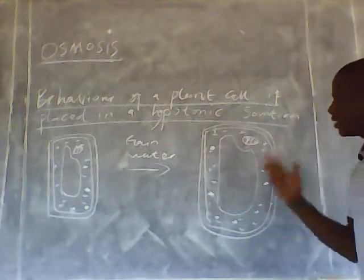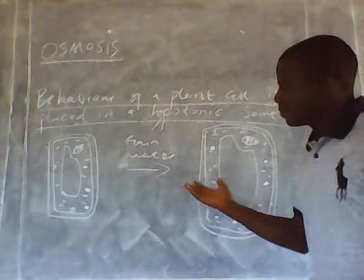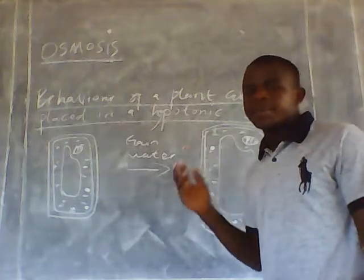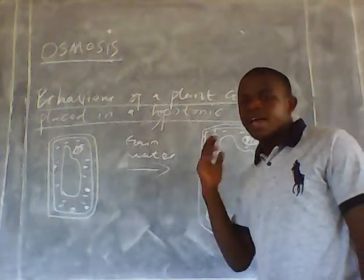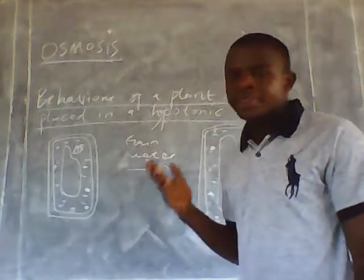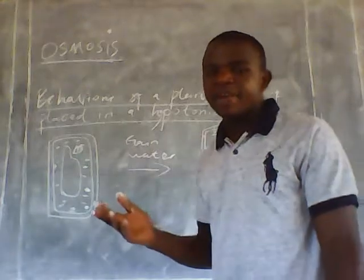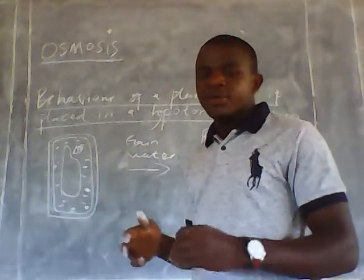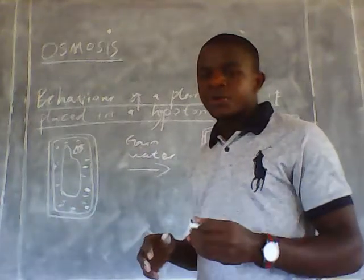The plant cell does not burst during this process because it is surrounded by an elastic cell wall that is made up of strong fibres known as cellulose.